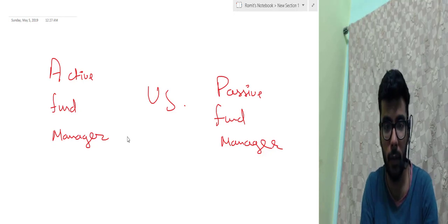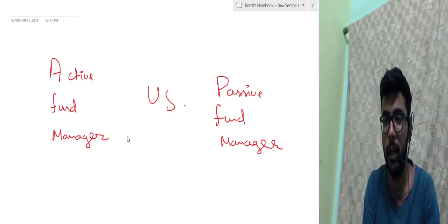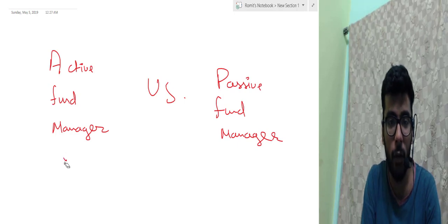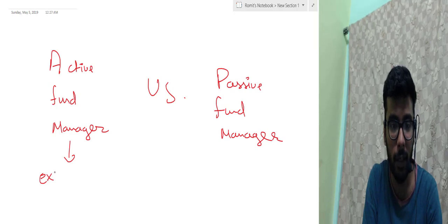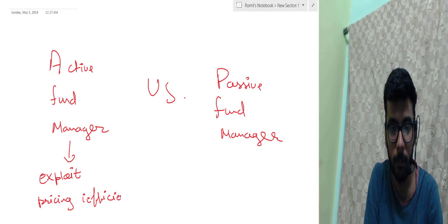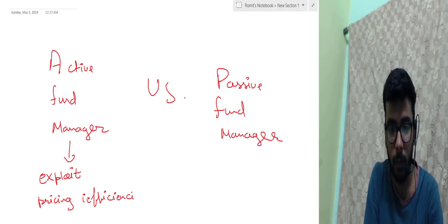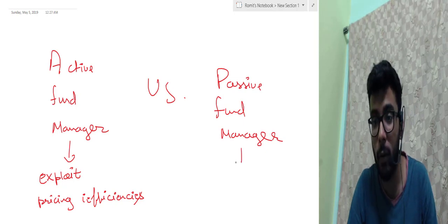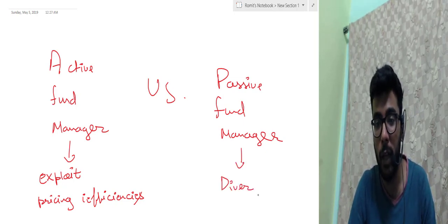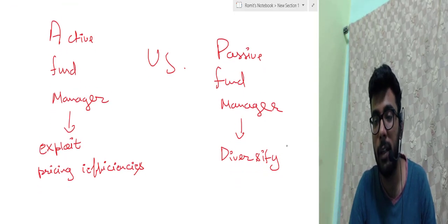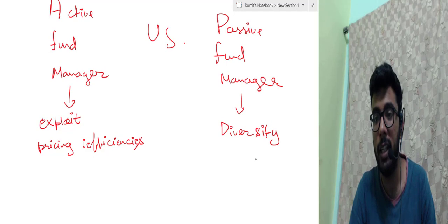There are two types of fund managers in the market. Active fund managers try to exploit pricing inefficiencies in the market. Passive fund managers believe there are no pricing inefficiencies, so they diversify their portfolio as much as possible — often copying all the shares in a stock market index like BSE Sensex or Nifty 50. This is called index tracking or index replication, and it reduces systematic risk.